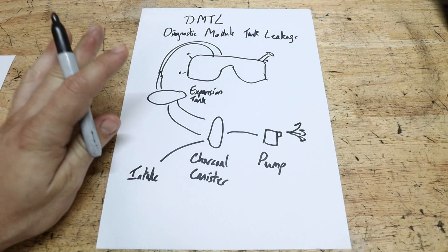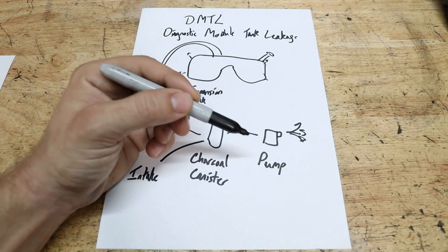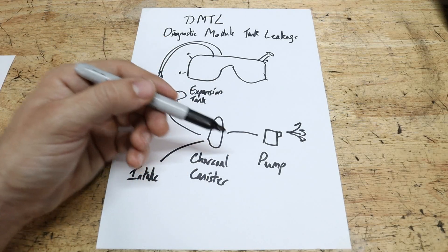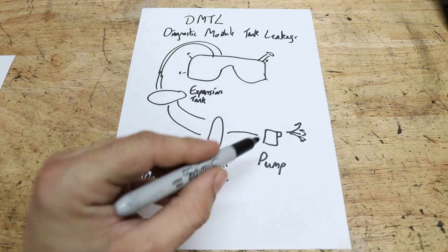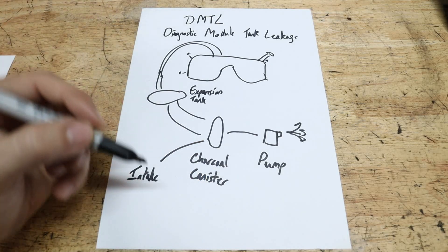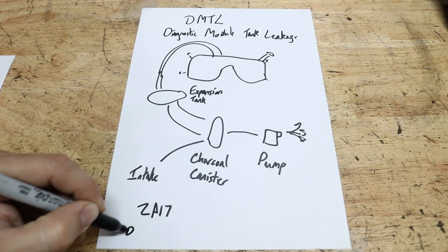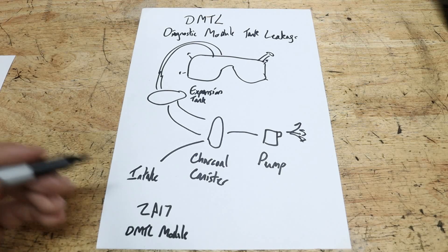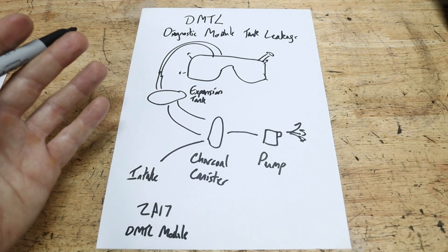There are only a couple of ways the system can create a fault. Number one is the pump failing, which is actually a pretty common part. Luckily, it's a Bosch pump and they're interchangeable between a lot of different cars. When this fails, it doesn't create any pressure in the system, and for that reason you're going to get a 2A17 fault — a DMTL module fault — meaning the whole system is not working and it wasn't able to start the test routine.